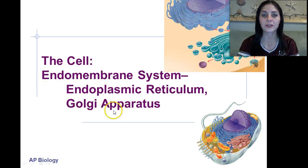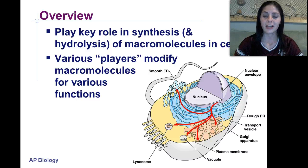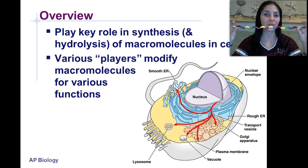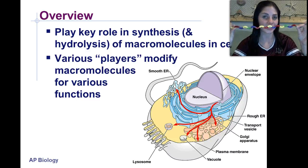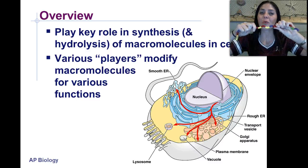We're going to begin with the endoplasmic reticulum and the Golgi apparatus. These two organelles play a key role in the synthesis and hydrolysis of macromolecules in the cell. If you focus your attention on the video feed, you probably remember these little tangle beads. We're talking about synthesis, or dehydration synthesis, and hydrolysis. If you remember hydrolysis, we add water to a molecule and it splits.